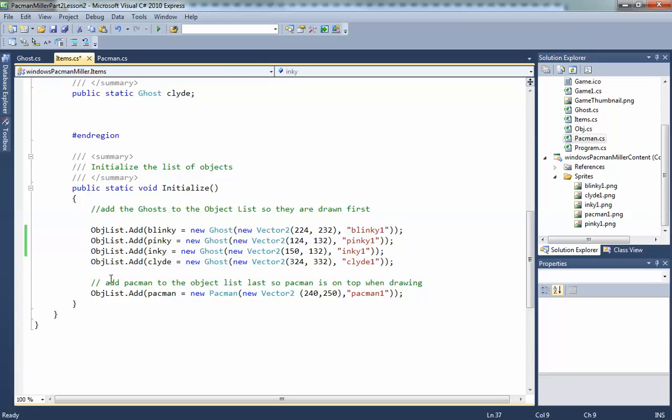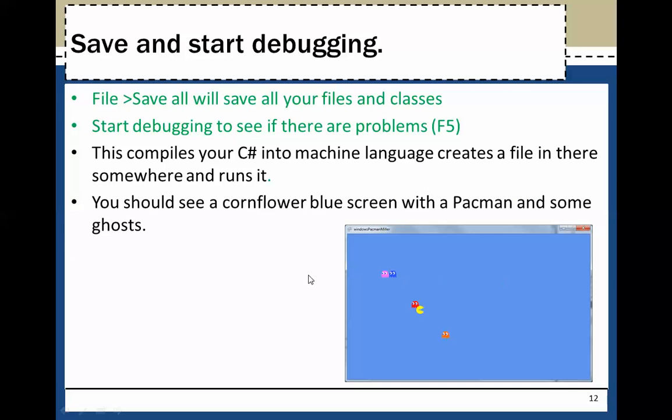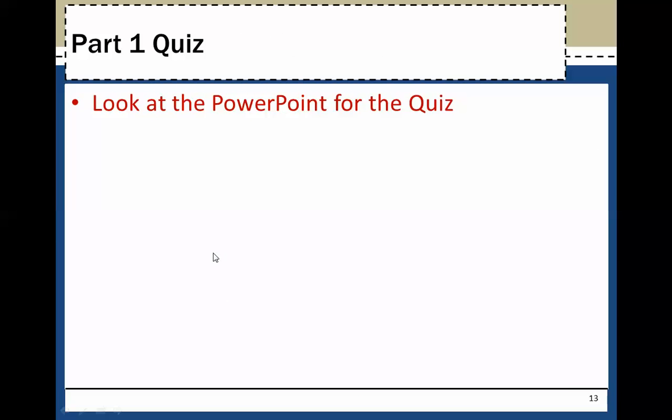Save and debug. File save will save all your files and classes. Start debugging by hitting F5. You should see a cornflower blue screen with a Pac-Man and some ghosts. That's the goal for this time and there's no quiz as of yet.